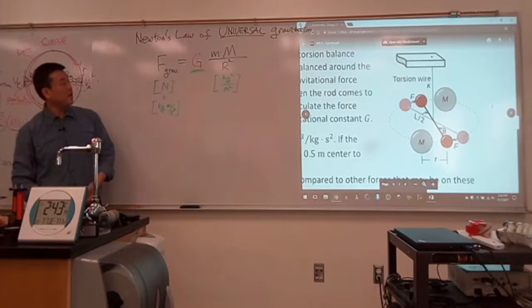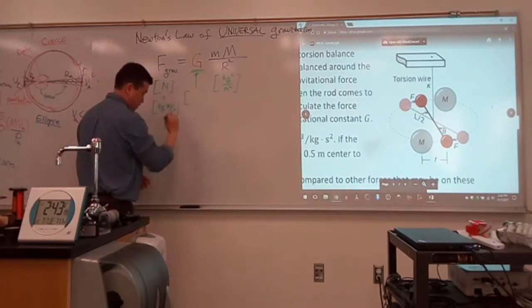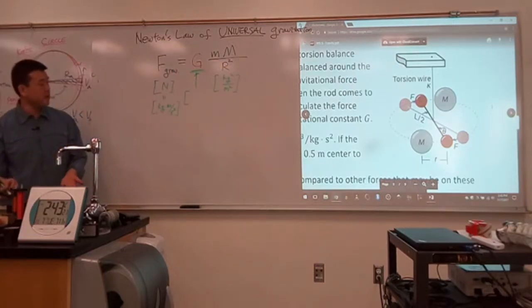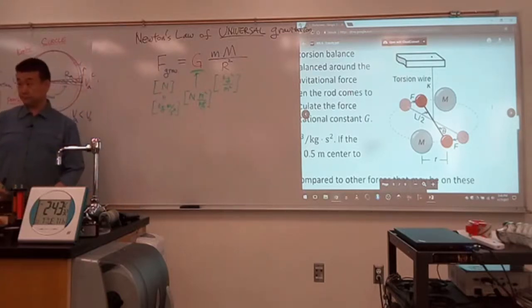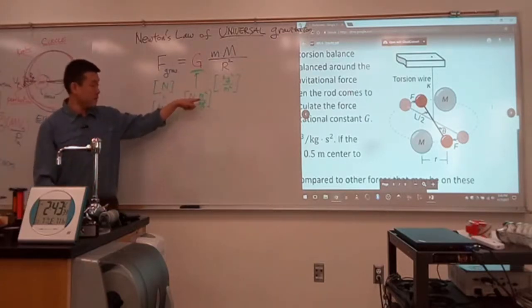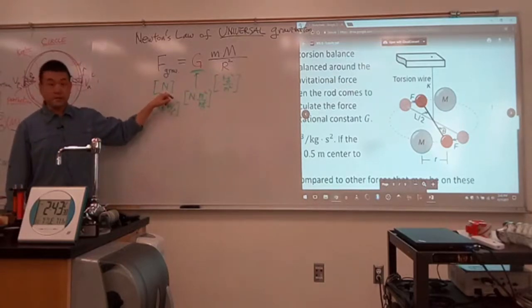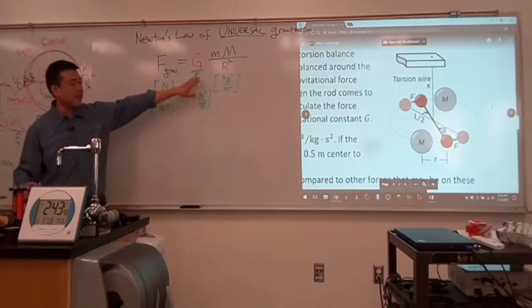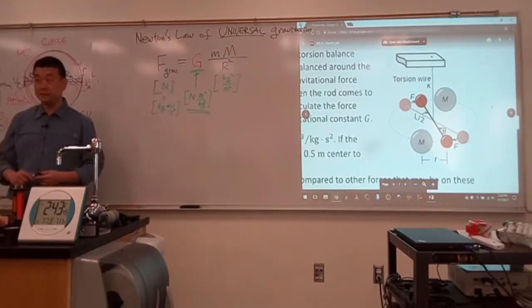You need to be able to say, all right. Whatever this is, this is going to be a constant that has this unit. It must have a unit of newton times meter squared per kilogram squared. That way, this will cancel out, this will cancel out, and I'm left with a newton. And, you know, if you want to simplify, you can put this in and cancel out some stuff. But this is the one that's easiest to memorize. Okay?